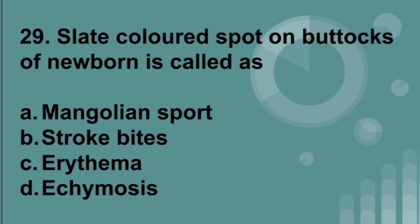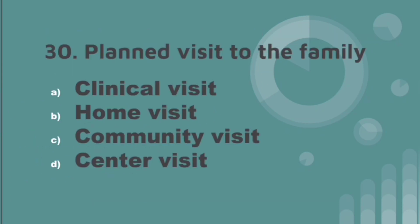A slate-colored spot on the buttocks of the newborn is called Mongolian spots. These are harmless greenish-bluish slate-like colored spots on the buttocks. The last question: a planned visit to the family is called a home visit.